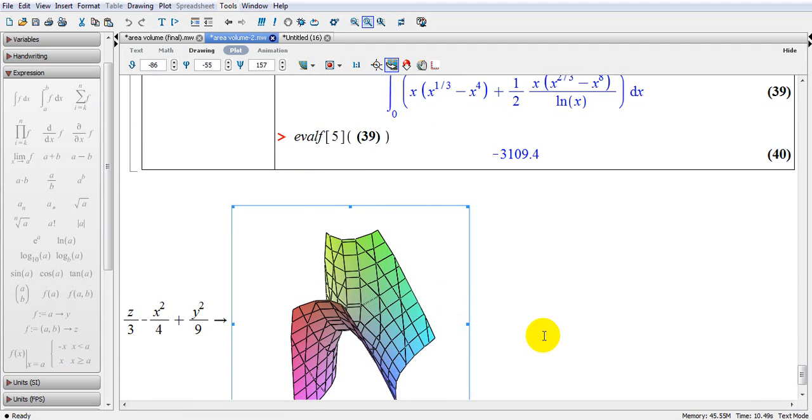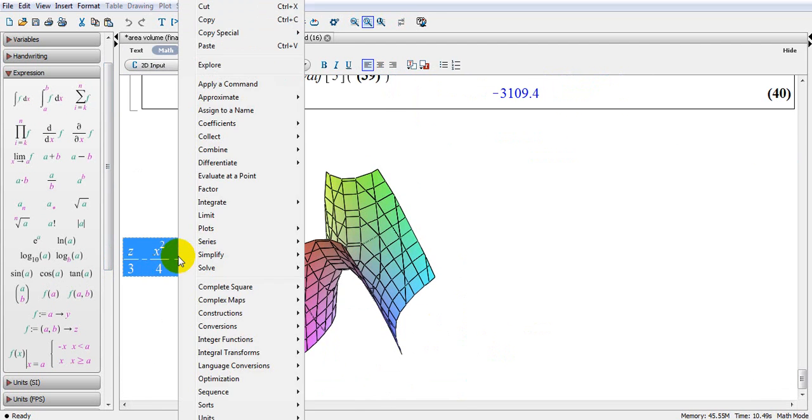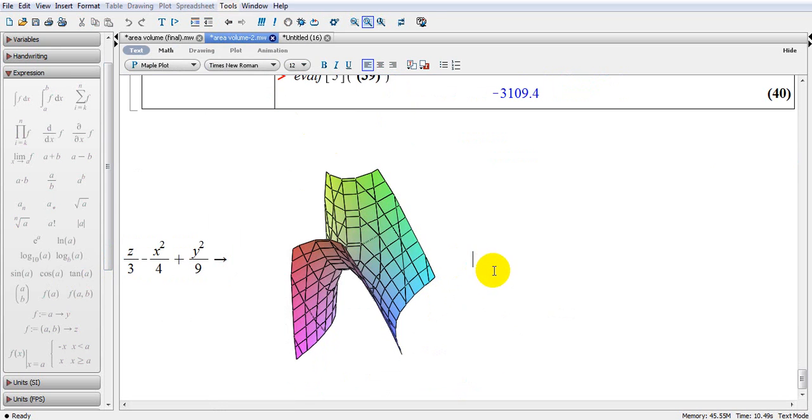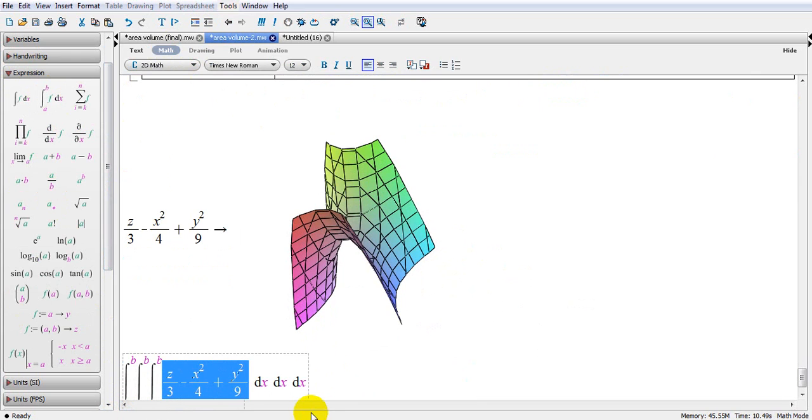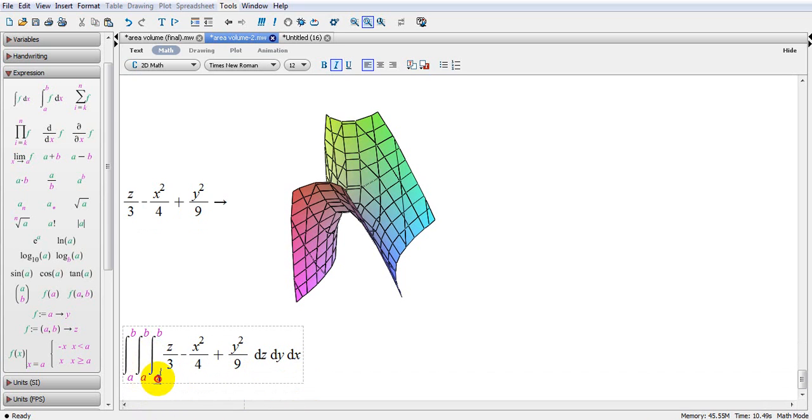Now let's just do a triple integration here and see if you get the same answer. You go to copy and next step is go to math and paste it. I do a triple integration one, two, three. First one is Z, next one is Y, and then X.